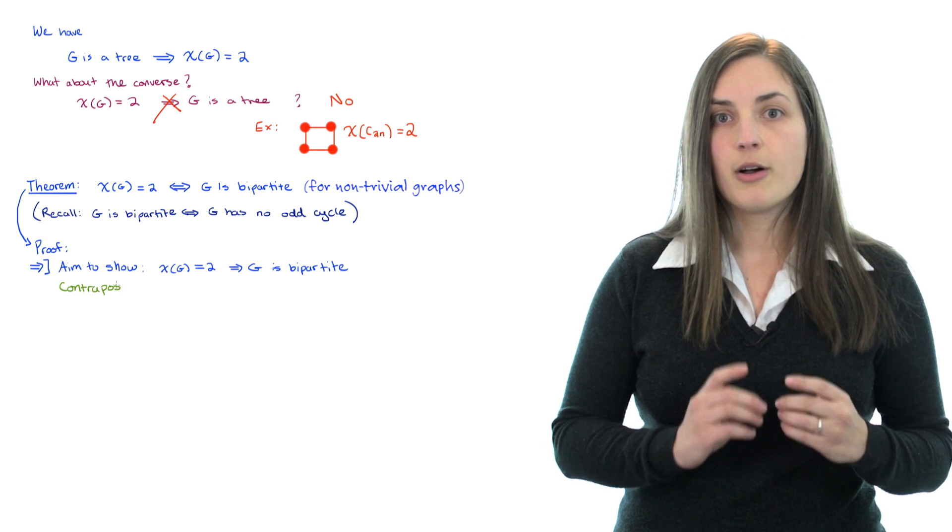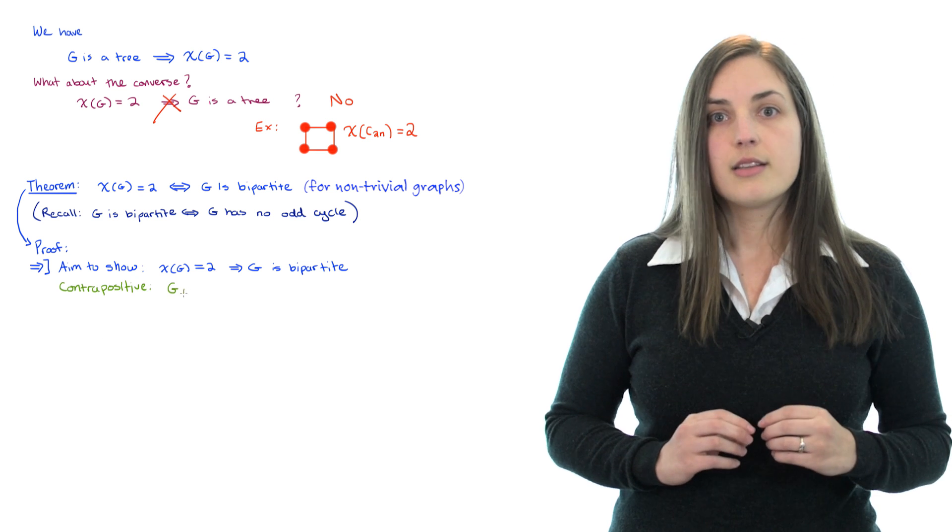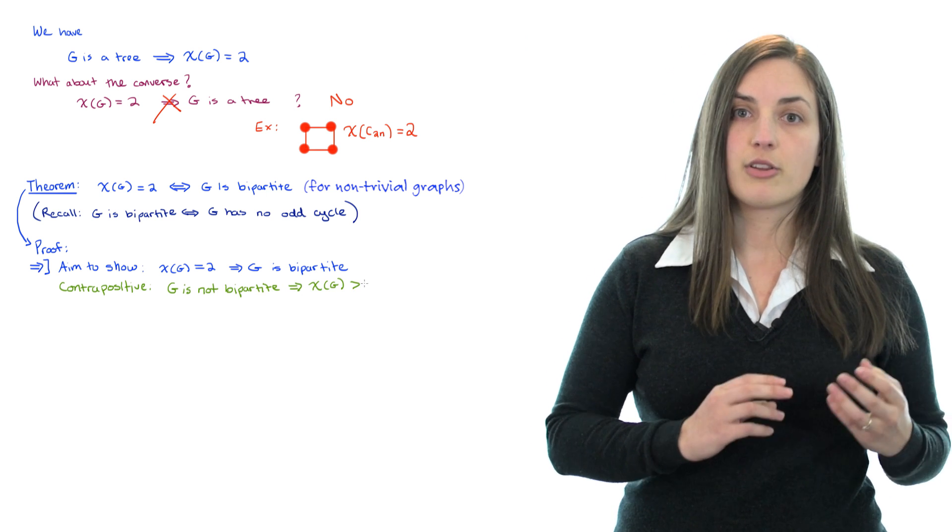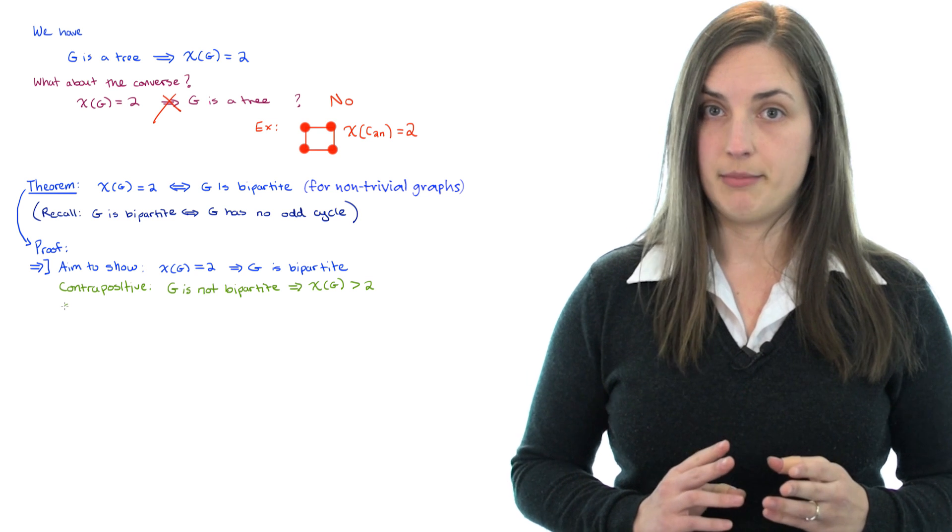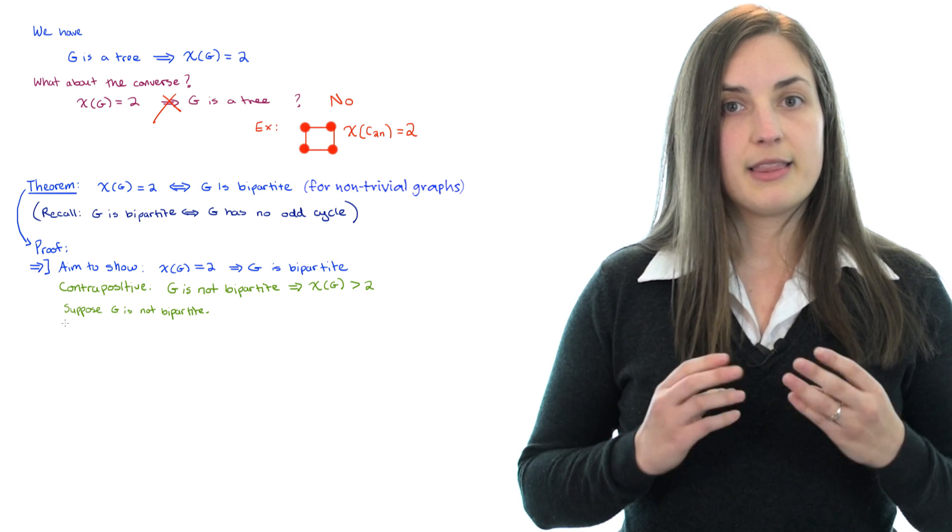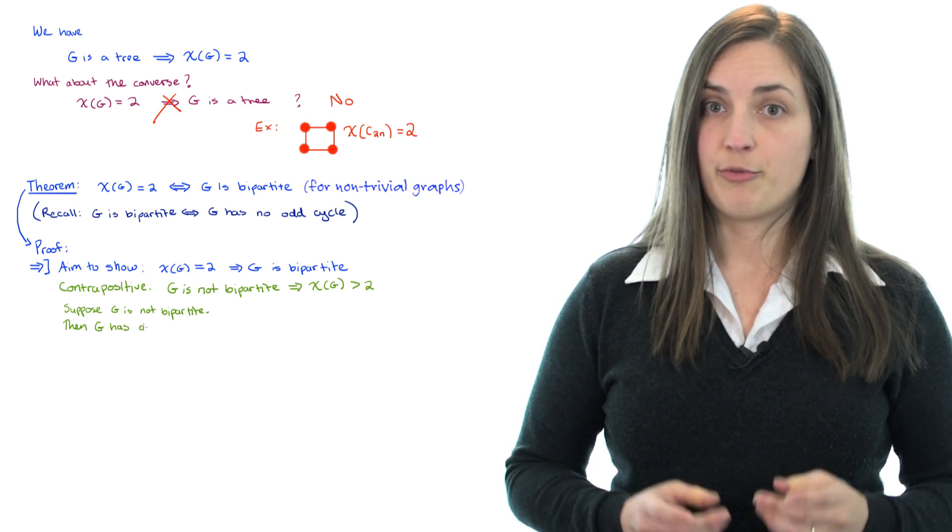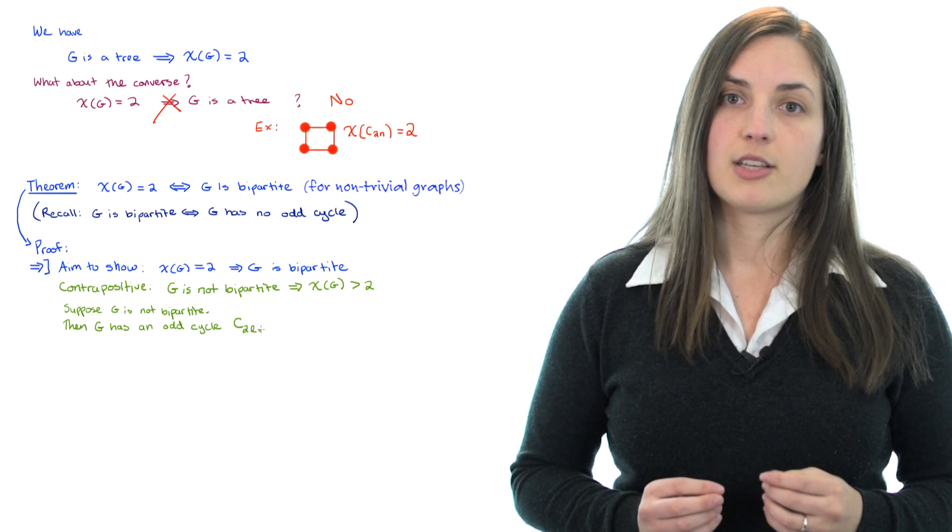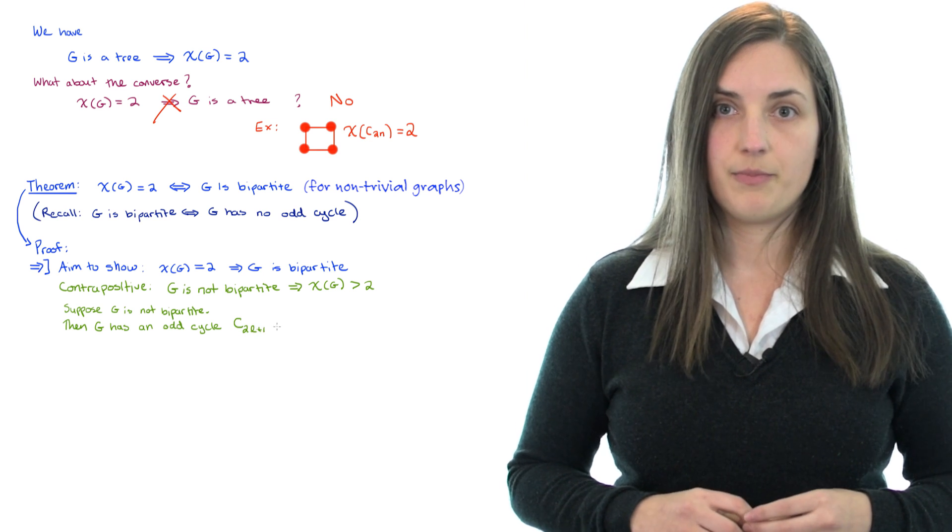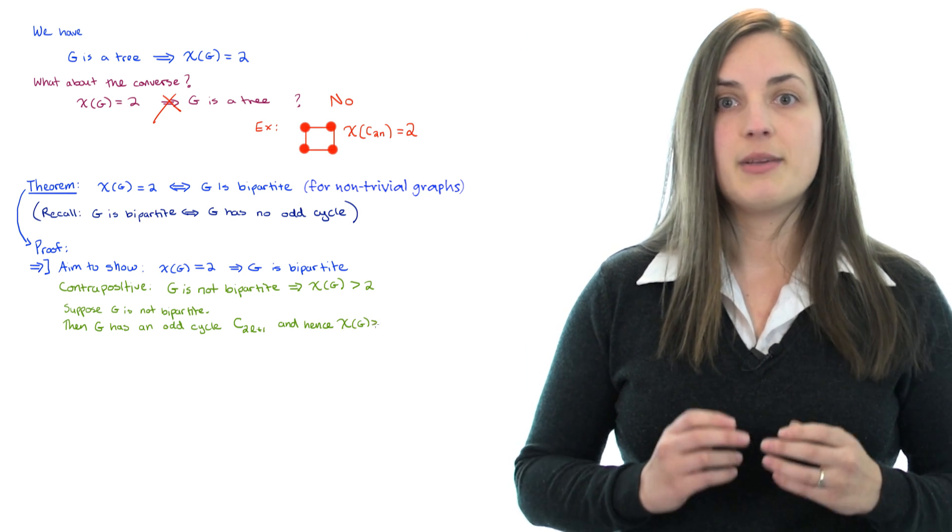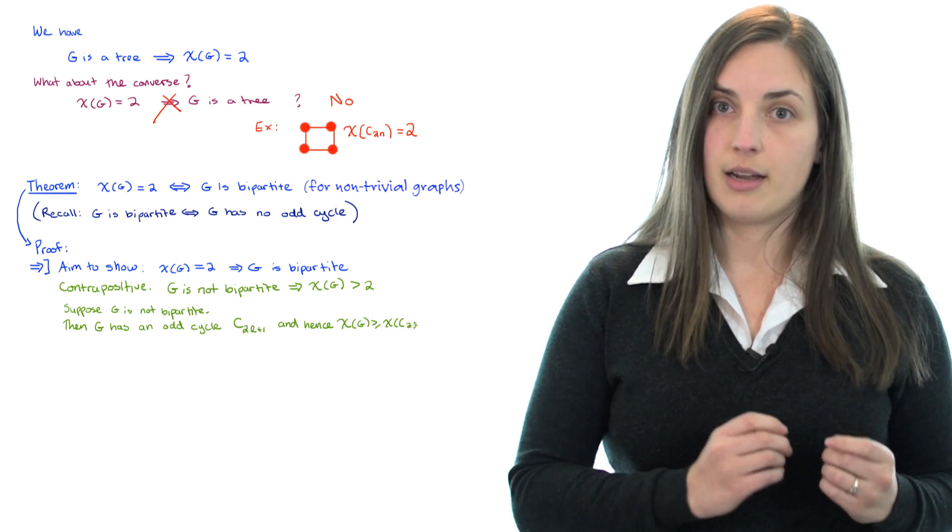The contrapositive of this statement says that if the graph is not bipartite, then the chromatic number is bigger than 2. In order to prove this statement, let's take a graph which is not bipartite. But then, because of the characterization we've previously seen of bipartite graphs, we know that this means the graph must have an odd cycle.